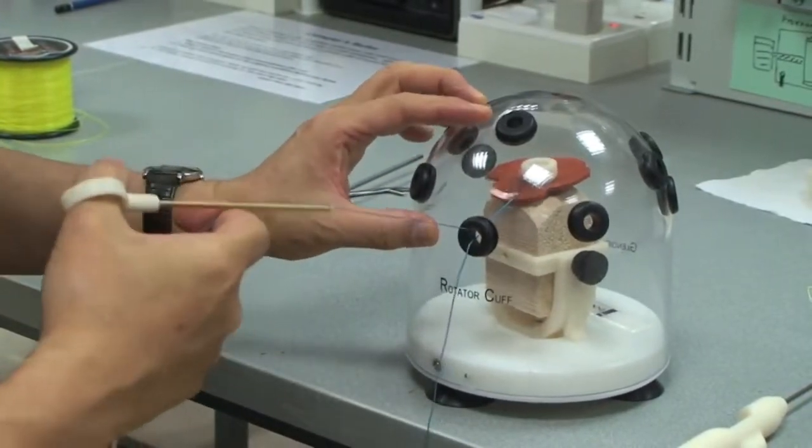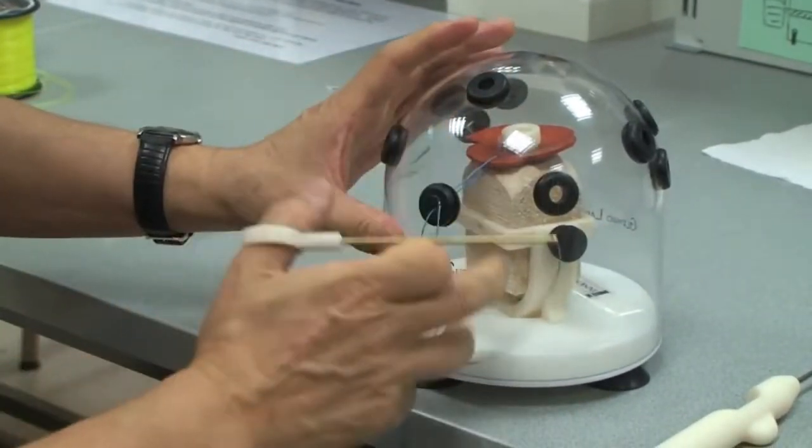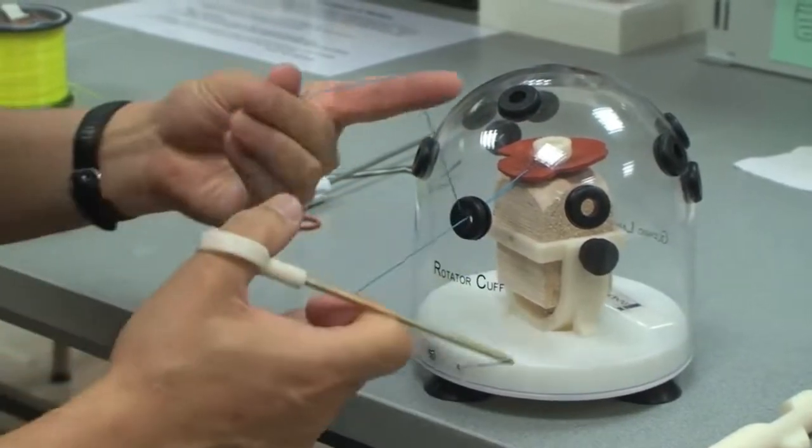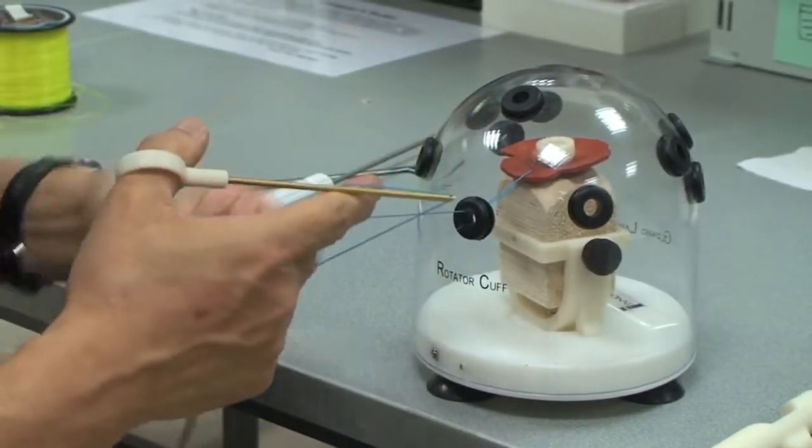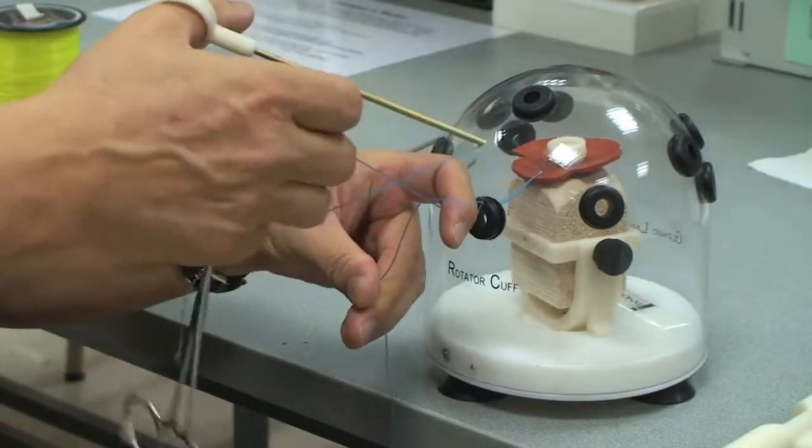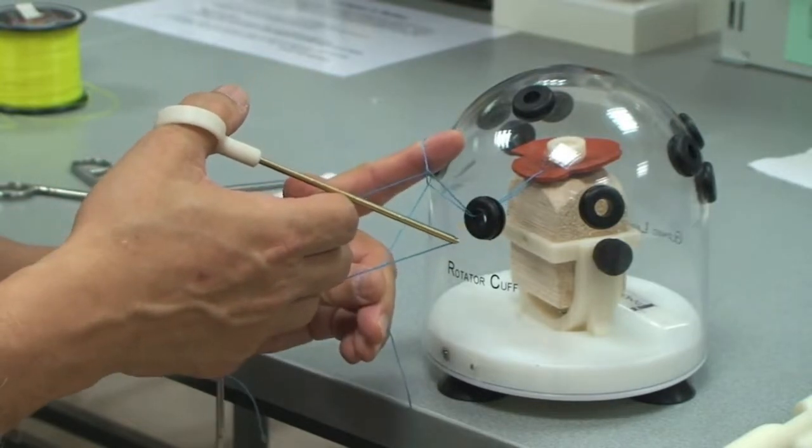So I'm going to do a half hitch. I'm just going to pull this through here. So I take my index finger, push it up, then I go around the post limb, and then use the back of my finger. Then pull it through. I'll show it to you again.